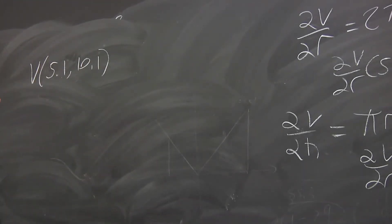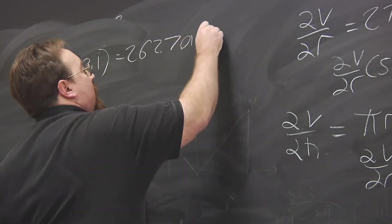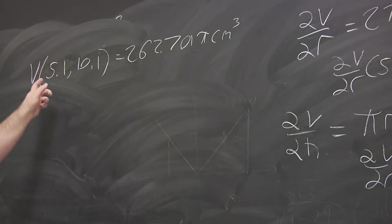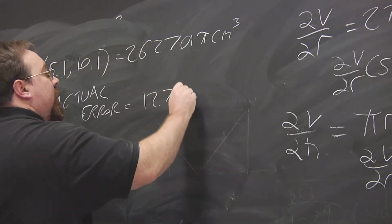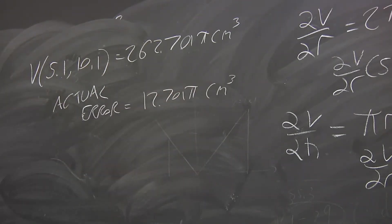What we get is 262.701π cubic centimeters. Whereas if it's 5 and 10, all we got was 250π. So the actual error is 12.701π. So we're talking 40 cubic centimeters when we take the π into account. So that's pretty bad.